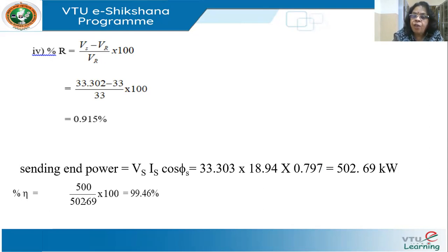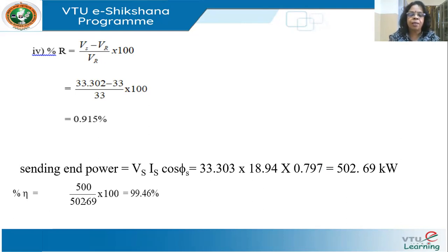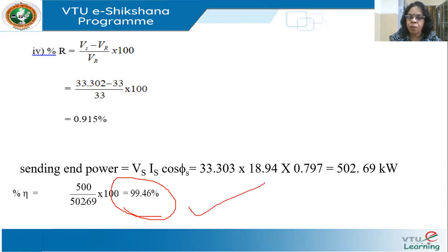For the efficiency, the sending end power for single phase is VS·IS·cos φS = 33,303 × 18.94 × 0.797 = 502.69 kilowatts. Therefore, efficiency = output / input × 100 = 500 / 502.69 × 100 = 99.46%. Very good efficiency.